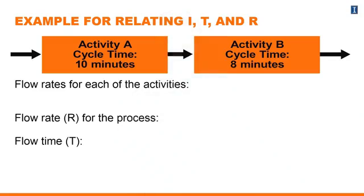Let's take this simple example of two activities — a very simple process with two activities. The first activity, A, has a cycle time of ten minutes, and activity B has a cycle time of eight minutes.